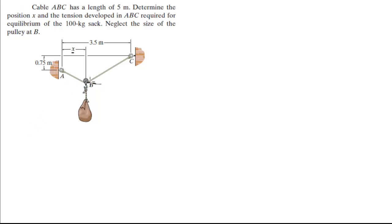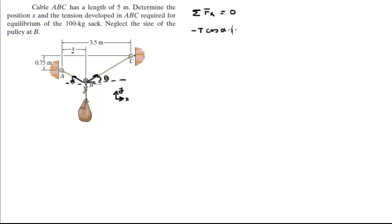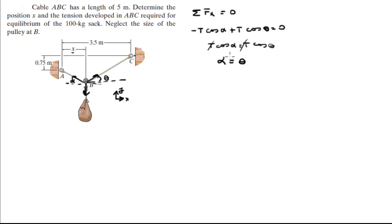The first thing is to notice these angles. Let's call this one theta and this one alpha. For the sum of the forces in the X direction, you have a tension here and the same tension here. Both tensions are the same because they are part of the same cable. So the sum of forces in X equals zero: minus T times cosine of alpha plus T times cosine of theta equals zero. Therefore, cosine of alpha equals cosine of theta, and since both are between 0 and 80 degrees, alpha equals theta.